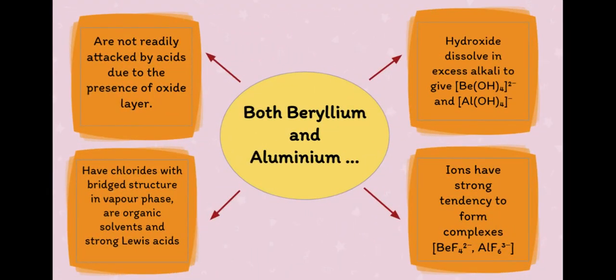We find that both beryllium and aluminium form an oxide layer on their surface when in contact with oxygen and are not readily attacked by acids due to the presence of this oxide layer.